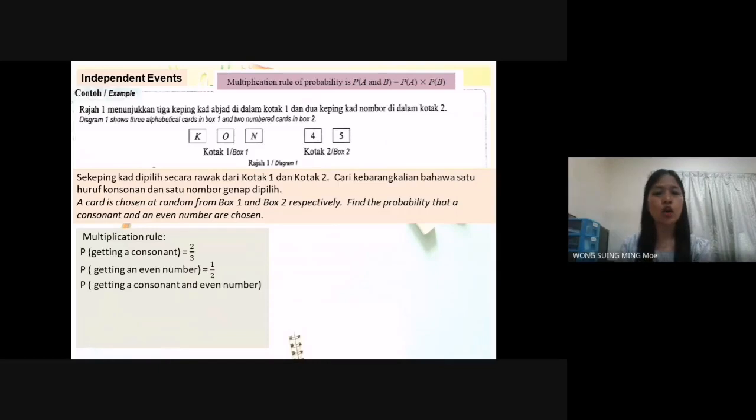What is the probability getting a consonant times probability getting an even number? 2 over 3 times 1 over 2 equal to 2 over 6. And we simplify it equal to 1 over 3.